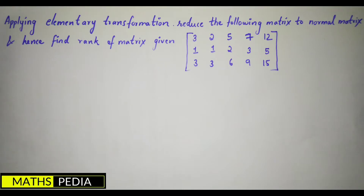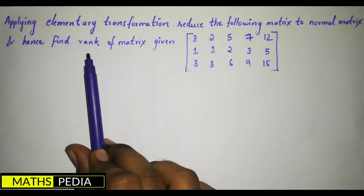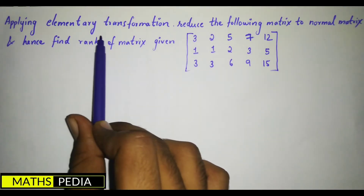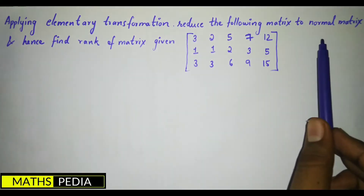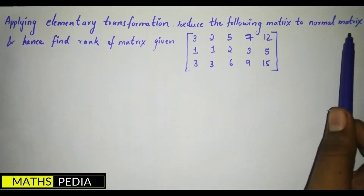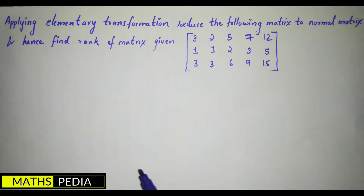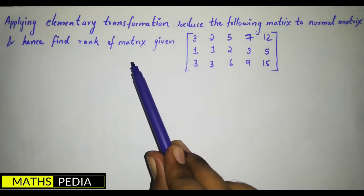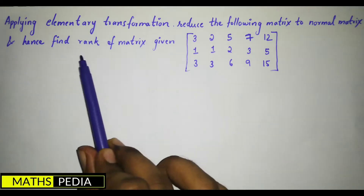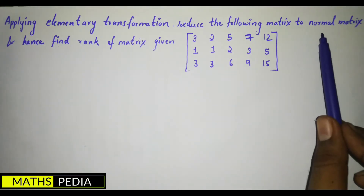Hello guys, in this video we are going to discuss elementary transformation and the normal form of a matrix, and how to find the rank of the matrix based on the normal form. First, you have to reduce a matrix to normal form. The question is: applying elementary transformation, reduce the following matrix to normal form, and hence find the rank of the matrix.